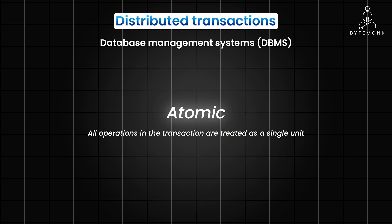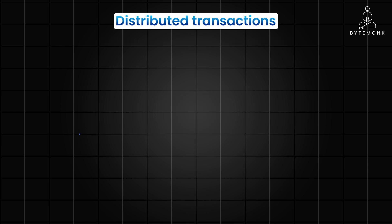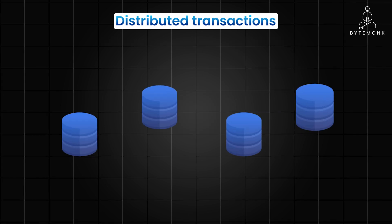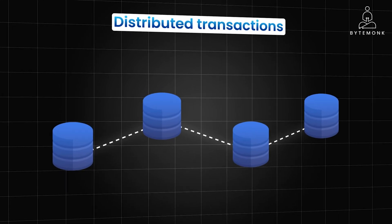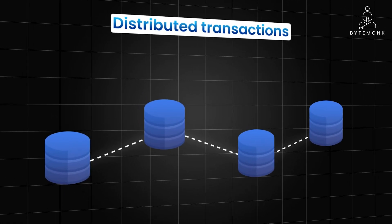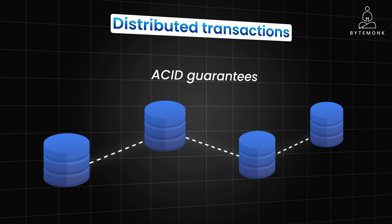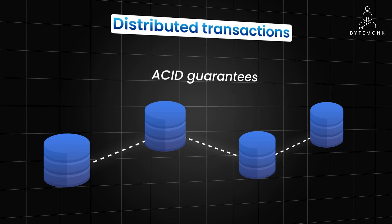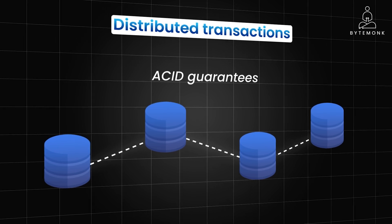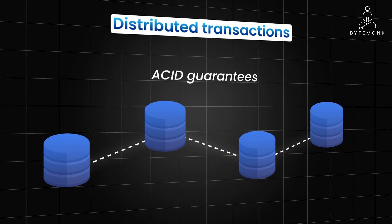Distributed transactions extend the concept of ACID properties to a scenario where the transaction spans multiple databases or services. The goal is to provide the same level of ACID guarantee even when the data is distributed across different systems.